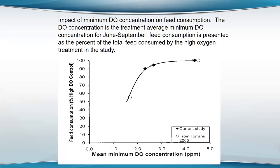This is work Mississippi State University did for channel catfish — I think the same would apply to most warm water culture organisms. On the y-axis is food consumption as a percent of the high-oxygen control. You see that if the minimum oxygen concentration in the morning is between two and three milligrams per liter, you don't see much difference in food consumption compared to maintaining five milligrams per liter. Based on that data, I conclude that if you maintain oxygen above three milligrams per liter, the catfish pond is okay.